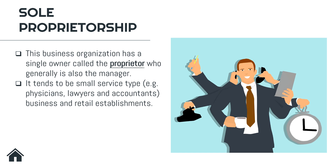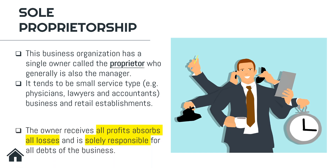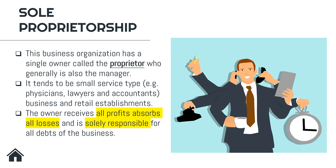These are businesses that provide services. For example, doctors, lawyers, and accountants. And also small retail establishments, like a simple sari-sari store or a simple retail store wherein there is only one owner. The owner receives all profits, absorbs all losses, and is solely responsible for all debts of the business. Since there is only one owner, all profits or losses go to him, and he alone is responsible for the debts of the business.